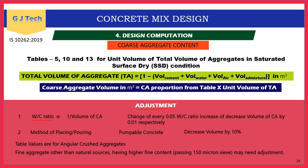Second adjustment for coarse aggregate: for pumpable concrete, decrease the coarse aggregate volume obtained from the table by 10%; no adjustment for non-pumpable concrete. For rounded aggregates (compared to crushed angular aggregates), coarse aggregate volume also decreases since rounded aggregates reduce water demand. Table values assume angular aggregates.